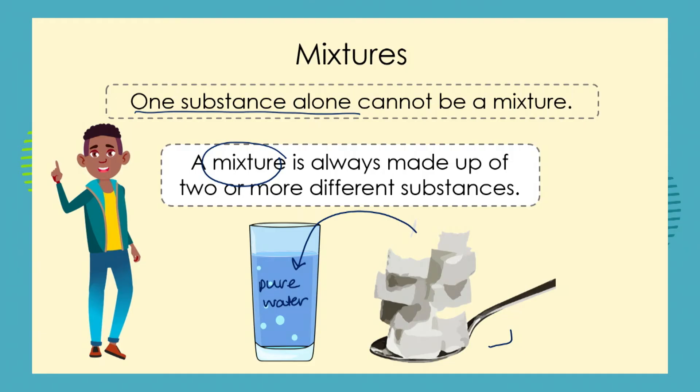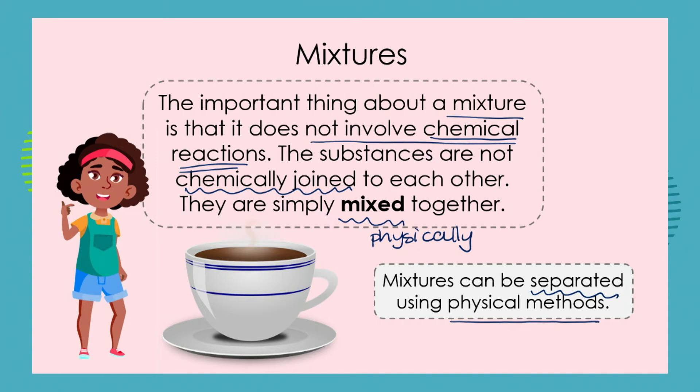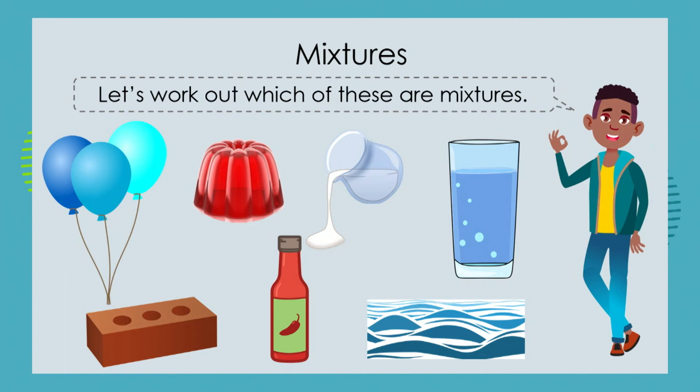We're going to look at simpler mixtures that we can separate a little later in our lessons. But the two very important parts of our definition are: a mixture is always made up of two or more different substances, and those substances are simply physically mixed and combined — they do not chemically bond to make a new substance. Now I want you to have a look at these pictures of everyday items and work out which of them are mixtures.